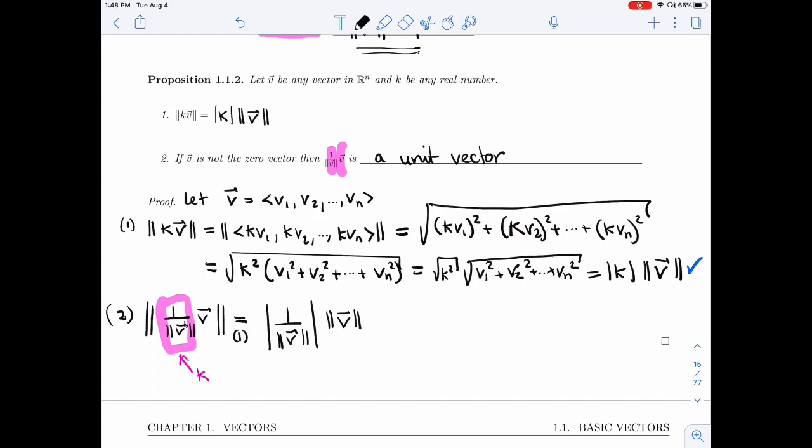All right, the length is a positive number. And so that absolute value doesn't do anything, doesn't flip any sign or anything in this case. It's already positive. And so this is what I get. So I have length 1. And so, yes, it is a unit vector.